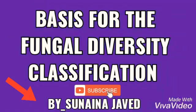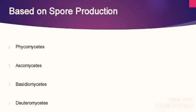I am presenting the basis for fungal diversity classification. On the basis of the organization of the vegetative thallus, the morphology of the reproductive structure, the way of spore production, and particularly the life cycle involved, the kingdom Mycota is classified into the following divisions: Phycomycetes, Ascomycetes, Basidiomycetes, and Deuteromycetes.